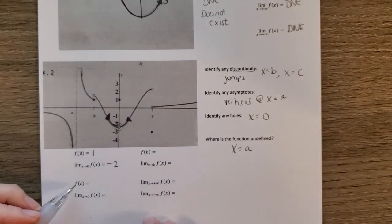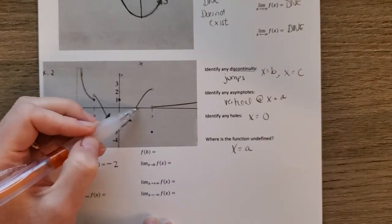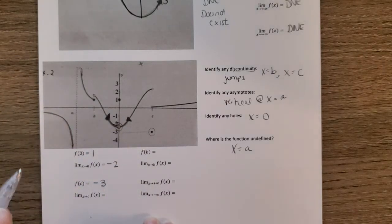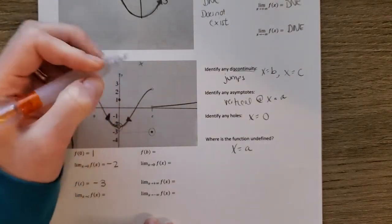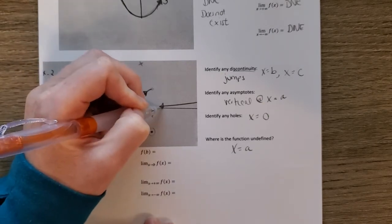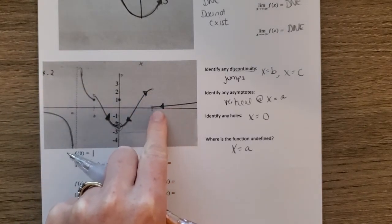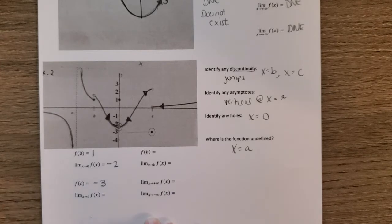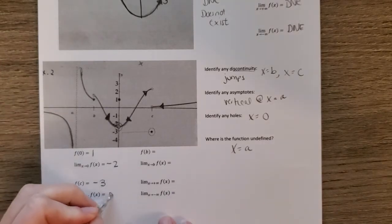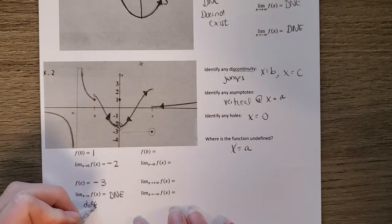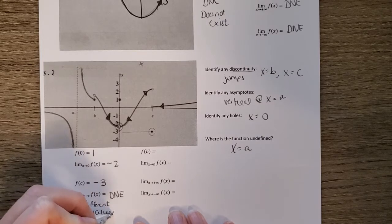For f of c, we go to x equals c and find the solid point — reading across, f of c equals negative three. For the limit as x approaches c, we approach from the left and right. From the left the value is around two; from the right it's around zero. Since these are different values, the limit does not exist — if you get two different values from different directions, it does not exist.